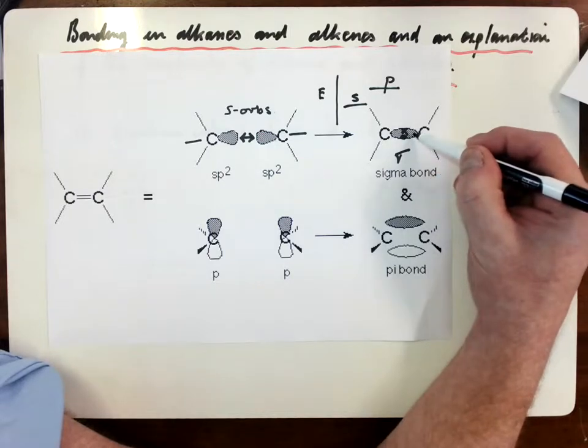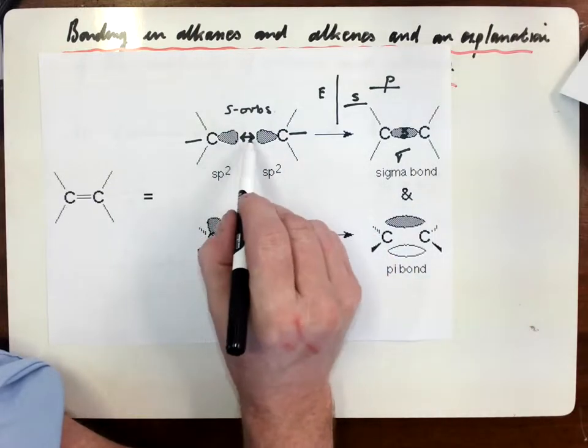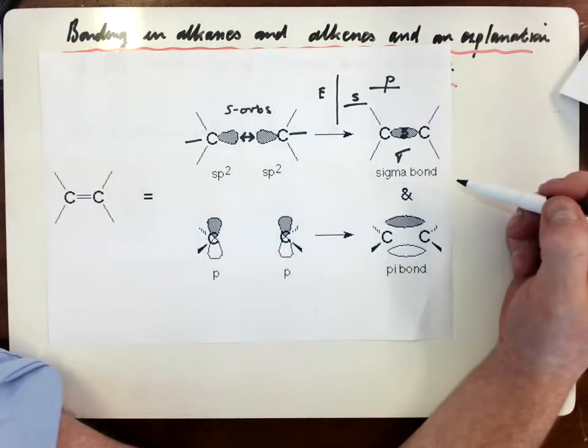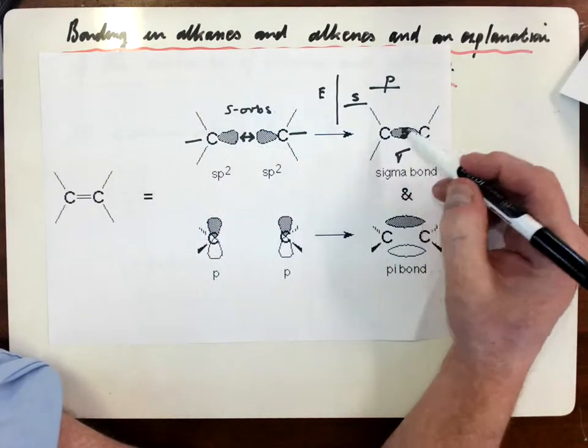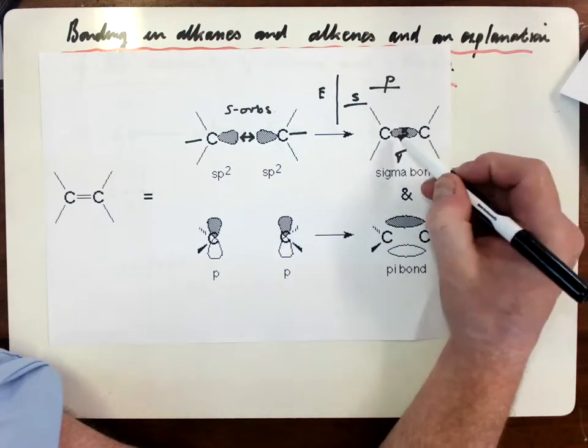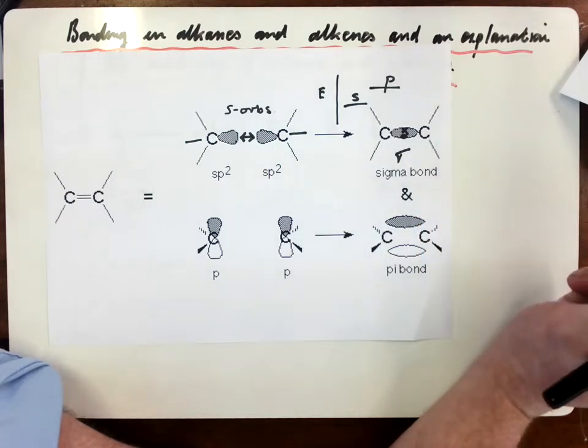You also get this head-on overlap, which gives you a very efficient overlap of the atomic orbitals to make this molecular orbital. And in other words, you get a very, very strong bond.